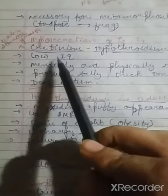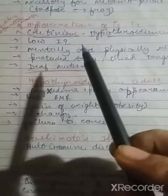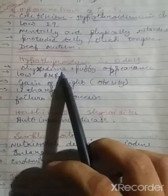If there is hyposecretion of T3 and T4 in children, it can cause cretinism — characterized by deaf-mutism, low IQ, mental and physical retardation, and thick tongue. If there is hypothyroidism in adults, it can cause myxedema, which results in low BMR, weight gain, and failure to conceive.